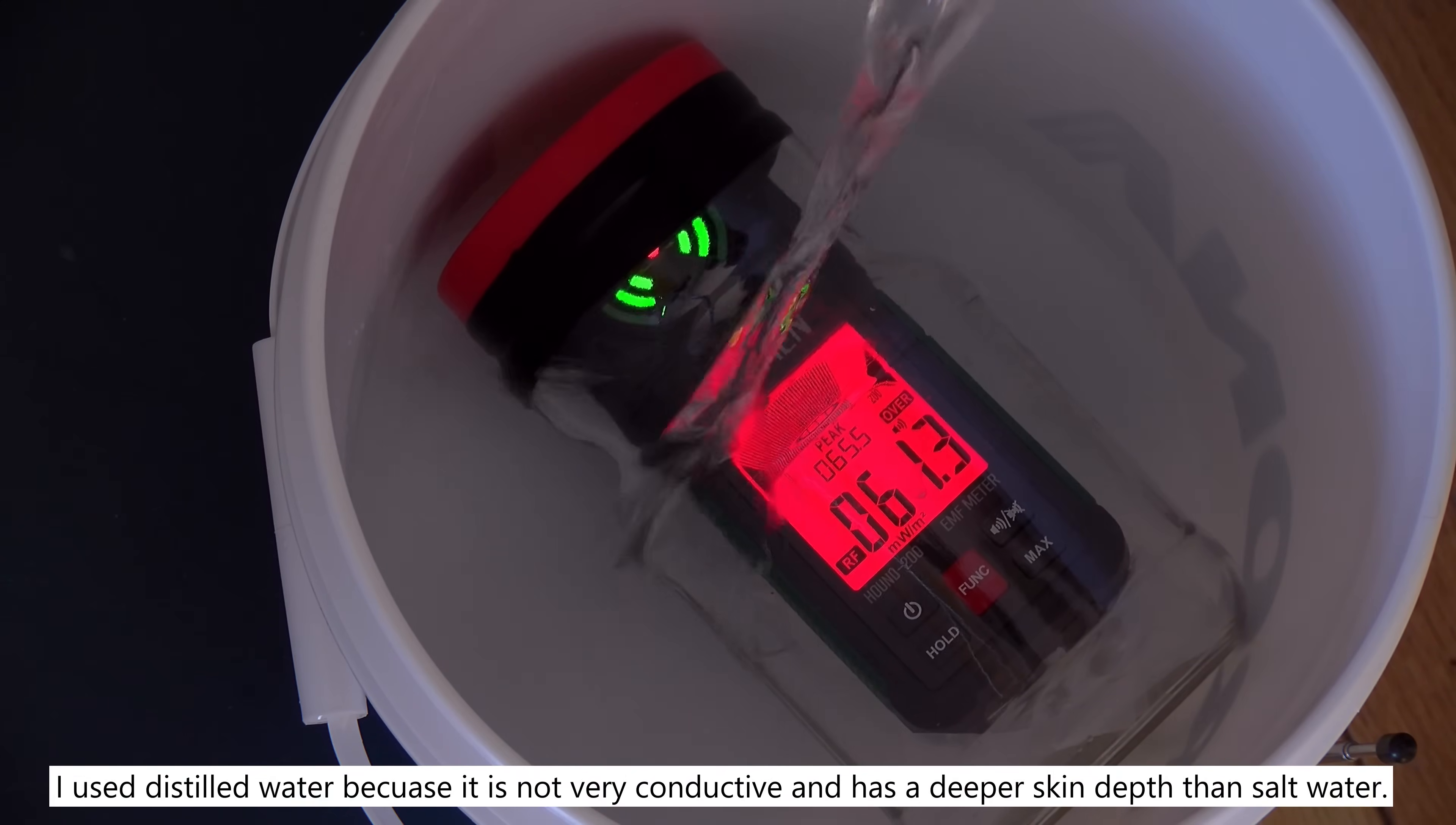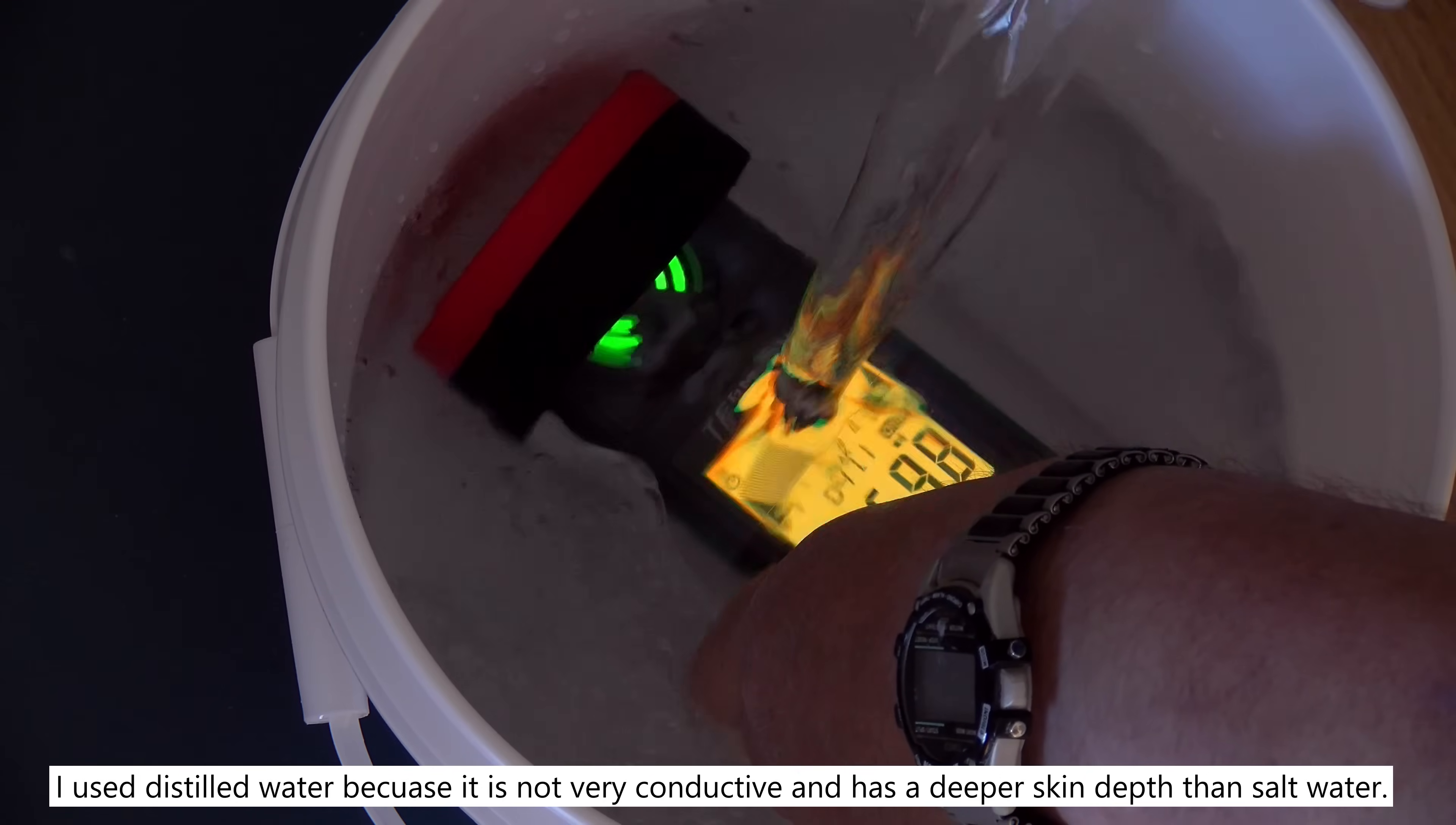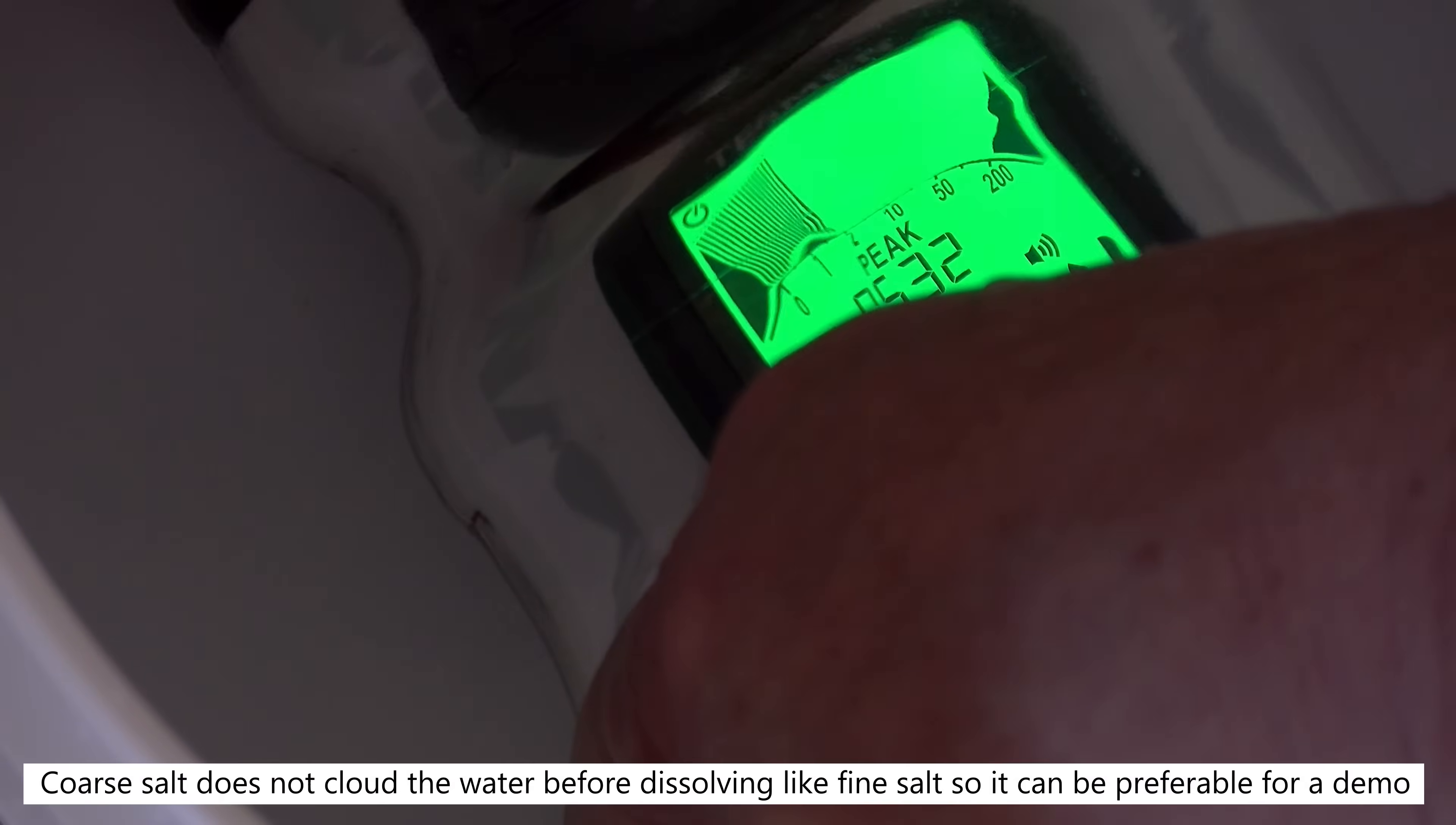So, here I add some distilled water and the signal strength goes way down. Some of it's lost due to skin depth attenuation, but a lot is lost due to reflections. Just like for light, radio waves are reflected on the water's surfaces, both the surface where the RF enters the water and also the surface where it goes into the glass jar. But, there's still enough RF to see it nicely on the meter.